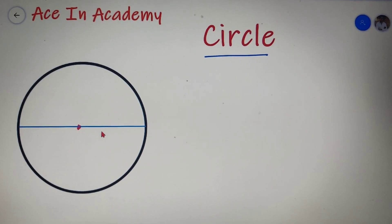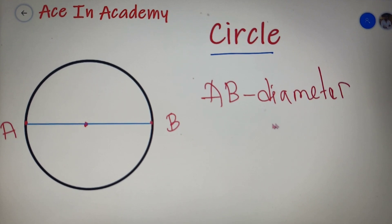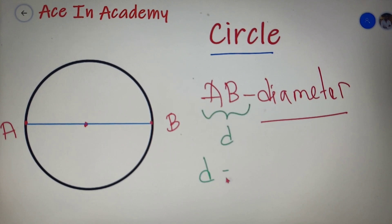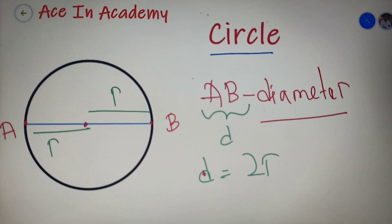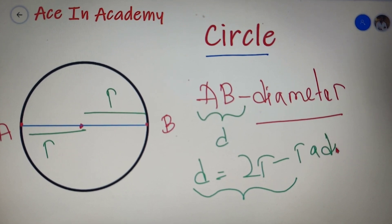A straight line passing through the center of the circle that connects two different points on the boundary of the circle is called as the diameter of the circle. If I name the points as A and B, then AB will be the diameter of the circle. If I denote AB as D, then D is equal to twice of R, because this distance is R and this distance is also R, so the diameter equals 2R, where R is the radius of the circle.